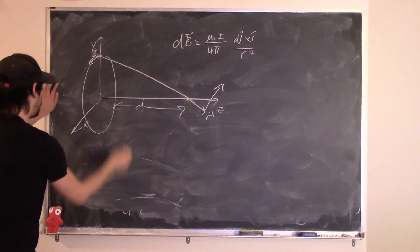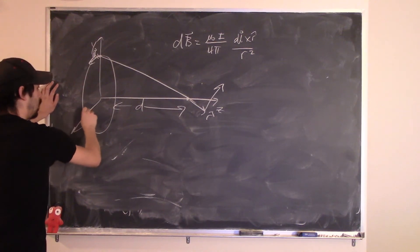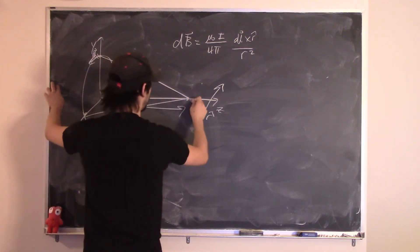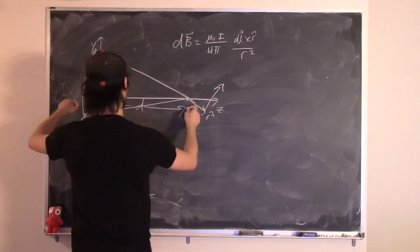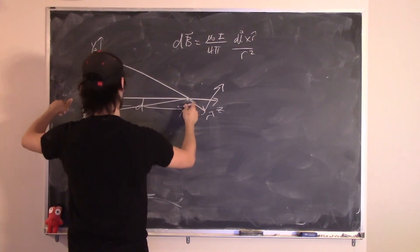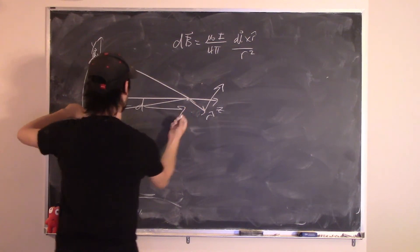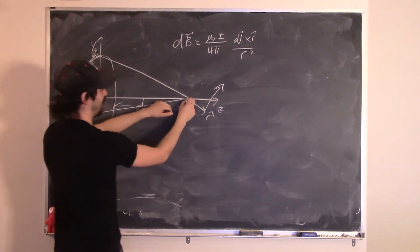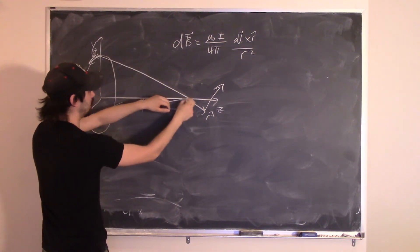For every point along the loop you get a different cross-product vector, making this geometry difficult. That's why I wouldn't ask something like this.